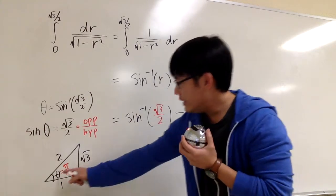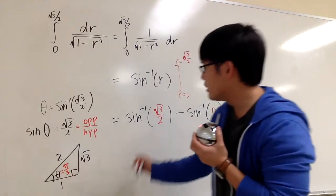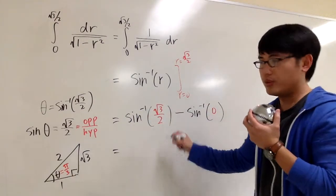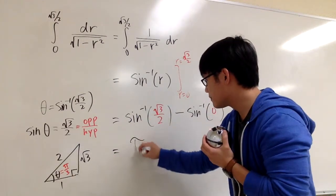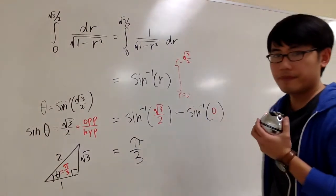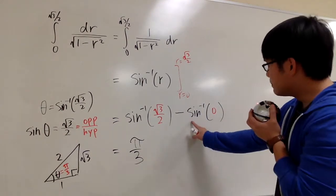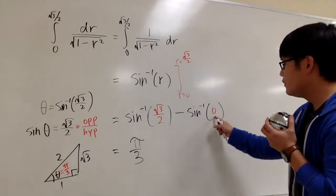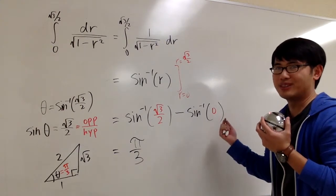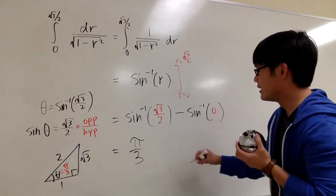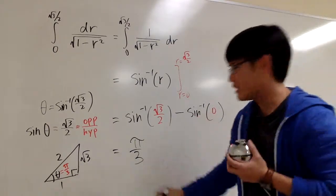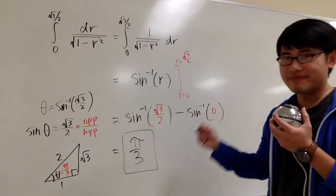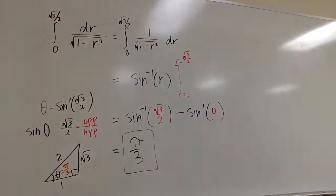When you are doing calculus, you use radians. So the angle theta is pi over 3, meaning the inverse sine of square root of 3 over 2 is pi over 3. For the second part, sine of what angle gives you 0? The answer is 0. So the inverse sine of 0 is 0. The final answer is pi over 3. We are all finished.